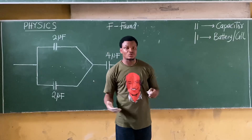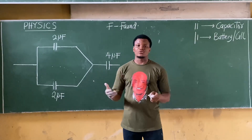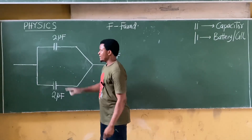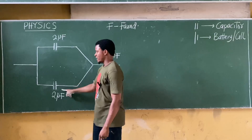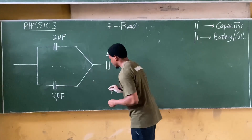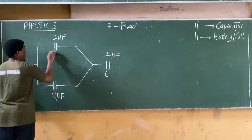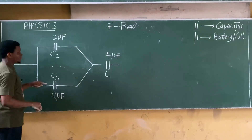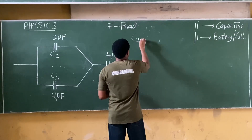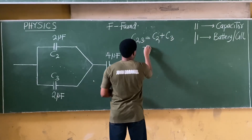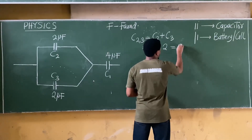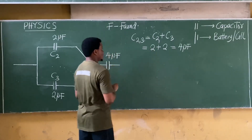When two or more capacitors are connected in parallel, all you have to do to find the equivalent is add them straight up. Let's call the capacitors C1, C2, and C3. Resolving C2 and C3 in parallel: C23 = C2 + C3 = 2 microfarad + 2 microfarad = 4 microfarad.